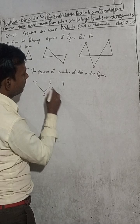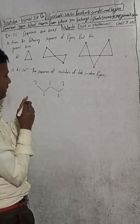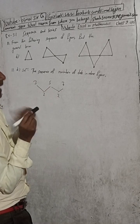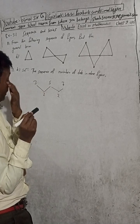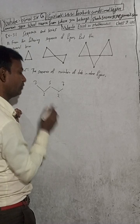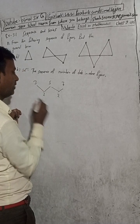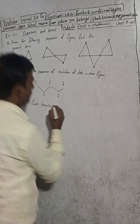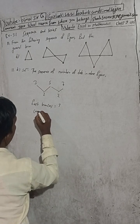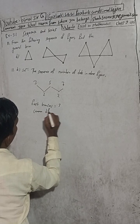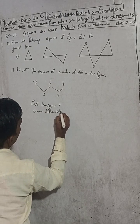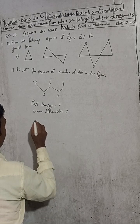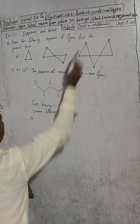By analysis: 5 minus 3 is 2, 7 minus 5 is 2 — the first difference is constant, so this is a linear sequence. First term A is equal to 3, and common difference D is equal to 2. This is what we call the common difference or first difference.